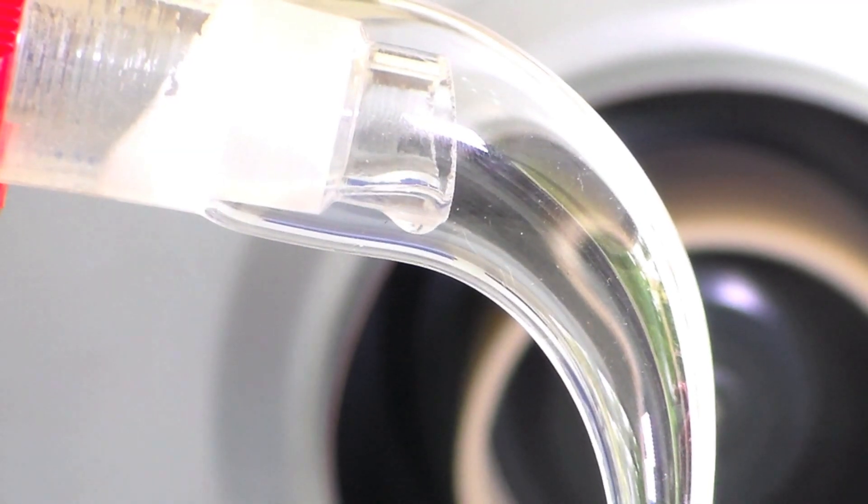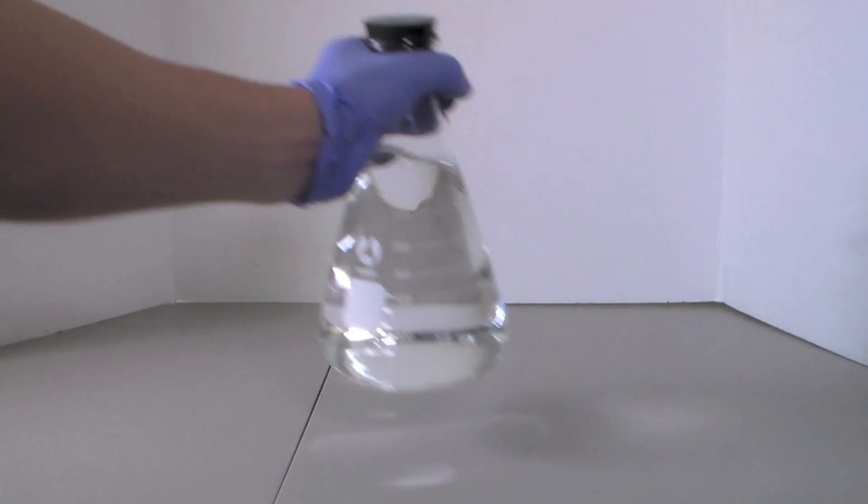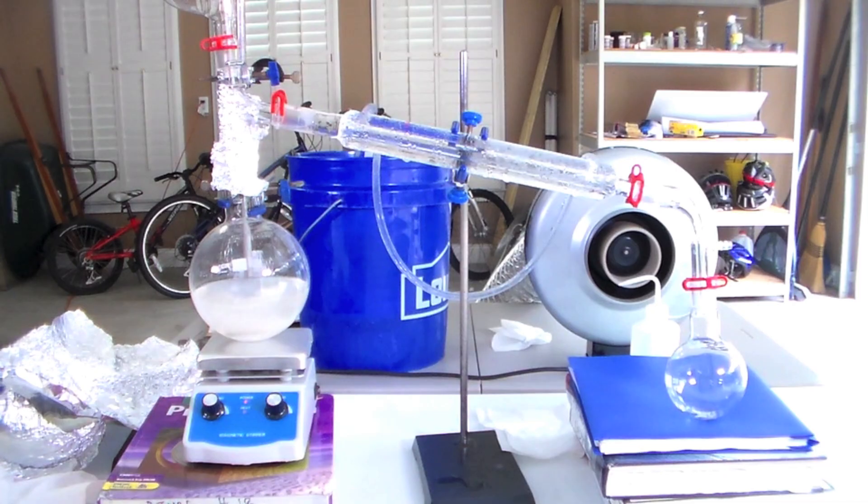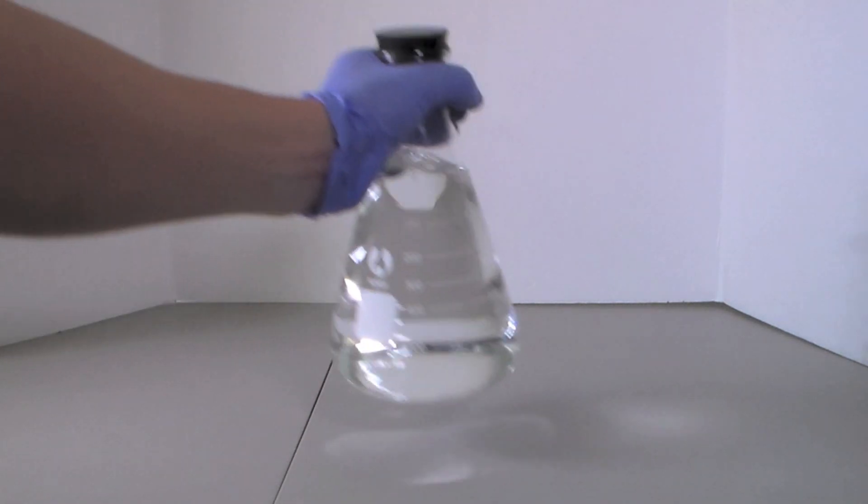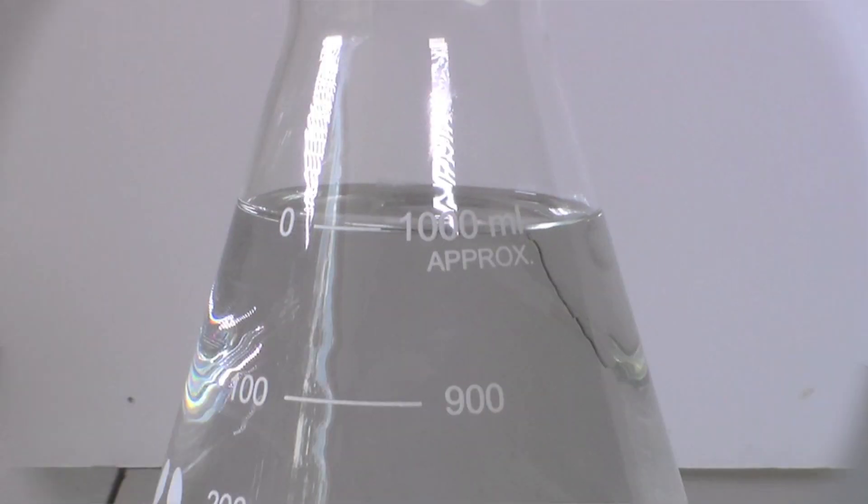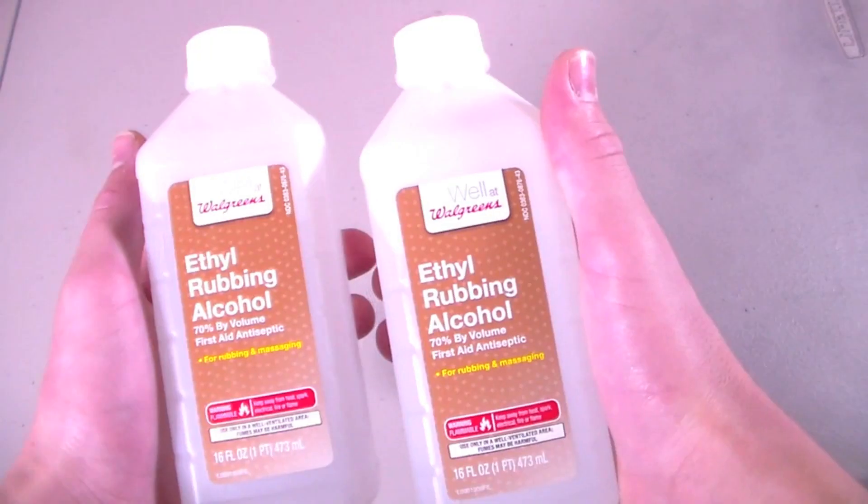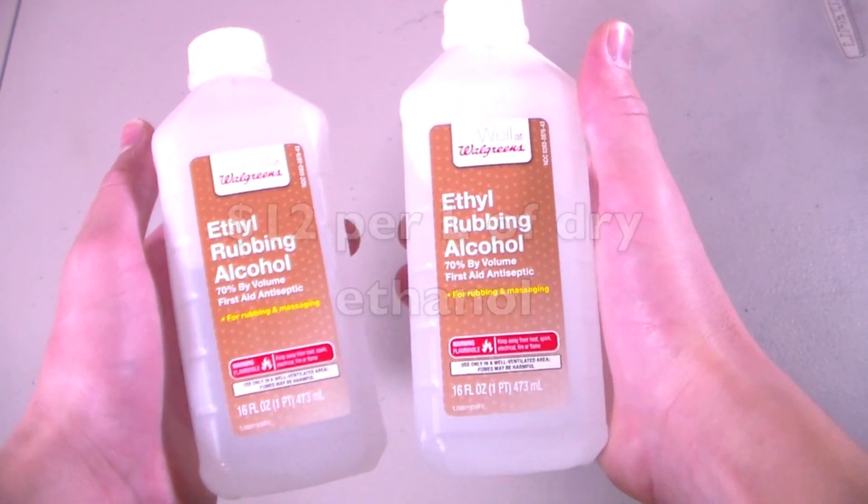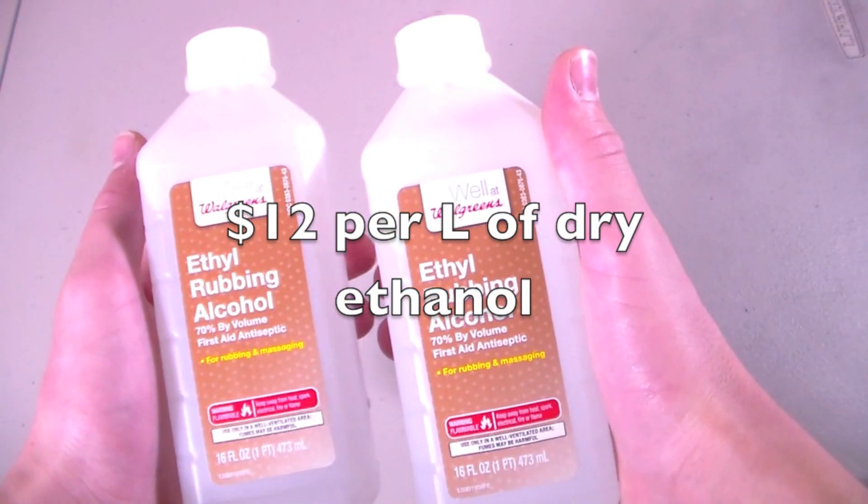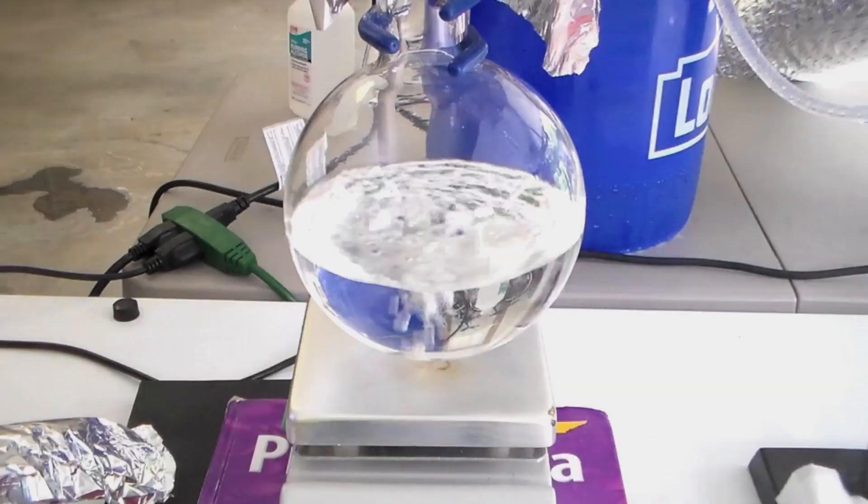This separation process is fairly straightforward and gives reasonably high yields, but it does take quite a bit of time, especially on a large scale. With this method I was able to obtain about a liter of nearly pure ethanol from four bottles of the 70% solution, which came to a total of about twelve dollars.